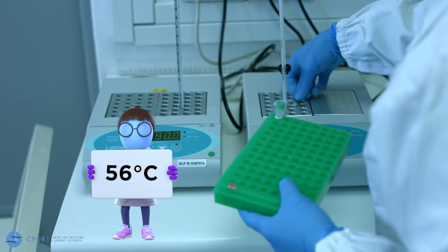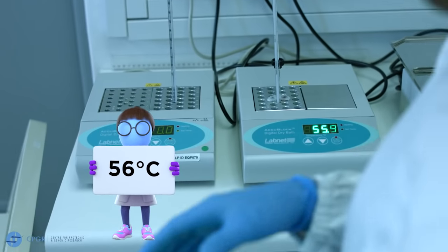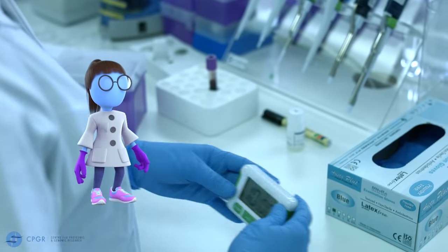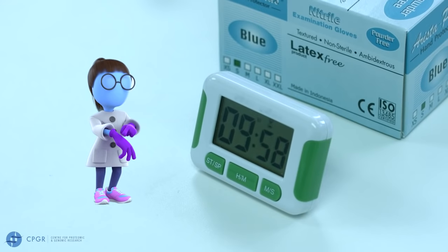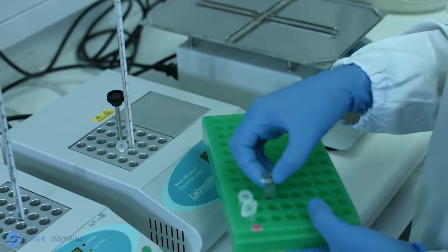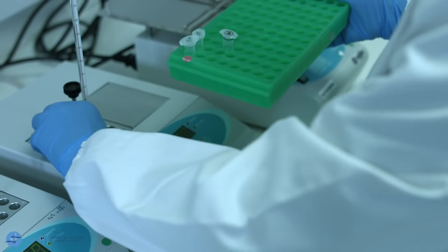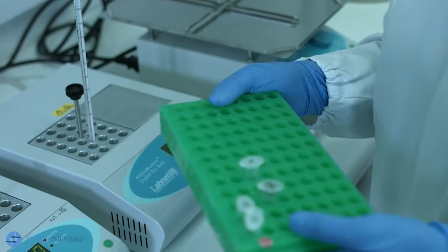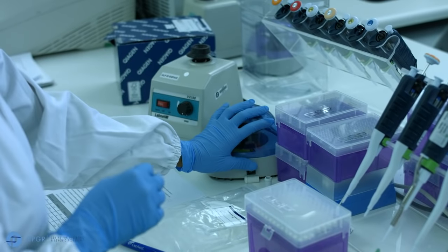Transfer the microtubes to the heating block that has been set at 56 degrees centigrade and incubate the samples for 10 minutes. At the end of the incubation period, remove the samples from the heating block and briefly centrifuge to remove any droplets from the lids.